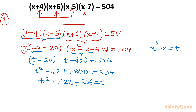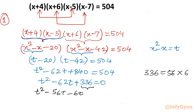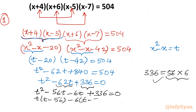This is now a quadratic equation in t. We can factorize by splitting the middle term: 336 = 56×6, and 56+6 = 62. So we write t²-56t-6t+336 = 0, giving t(t-56)-6(t-56) = 0, and ultimately (t-6)(t-56) = 0. Therefore t = 6 or t = 56.